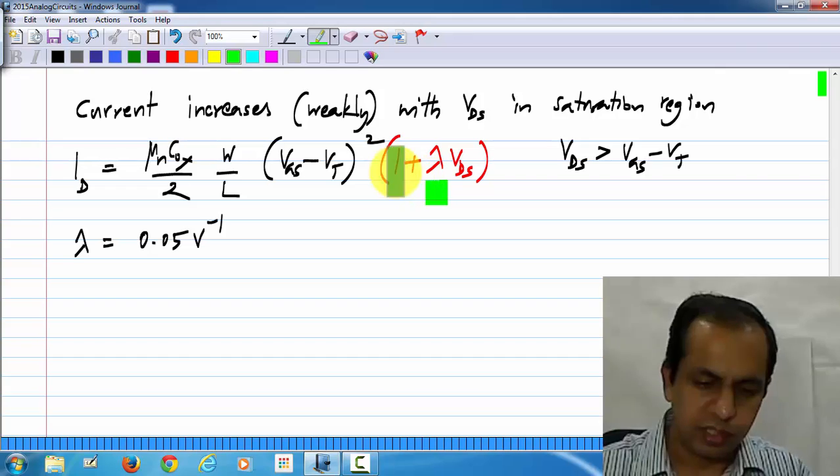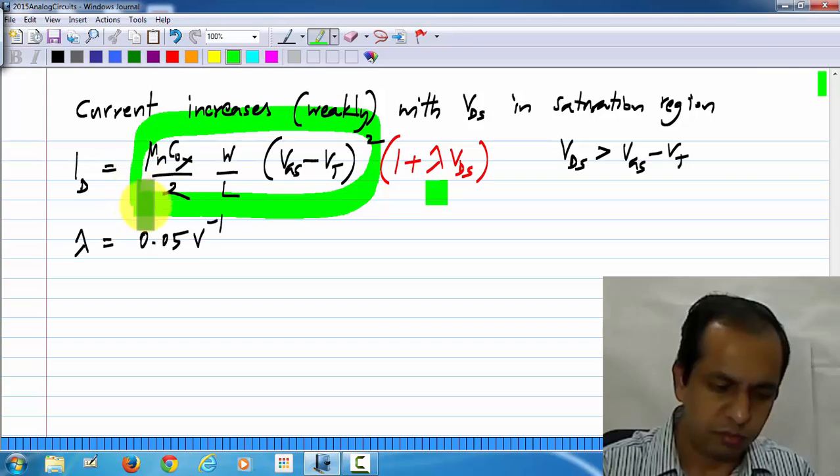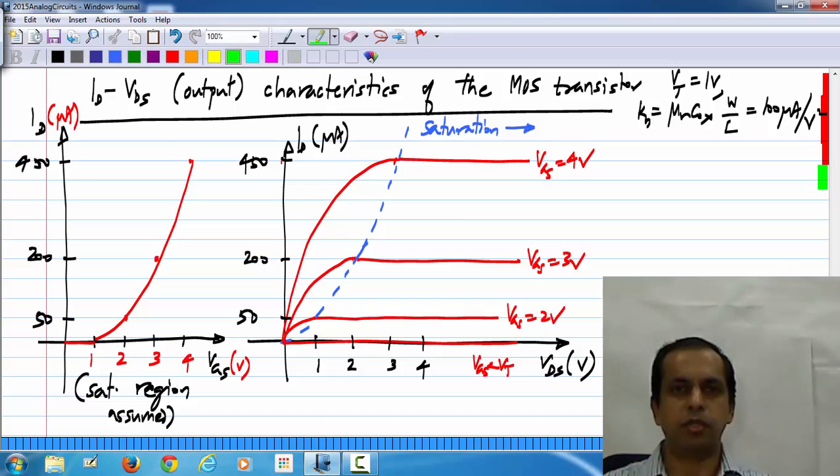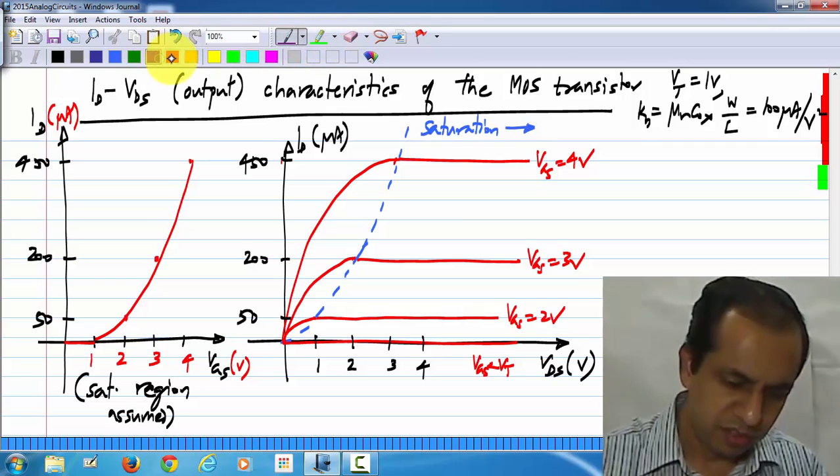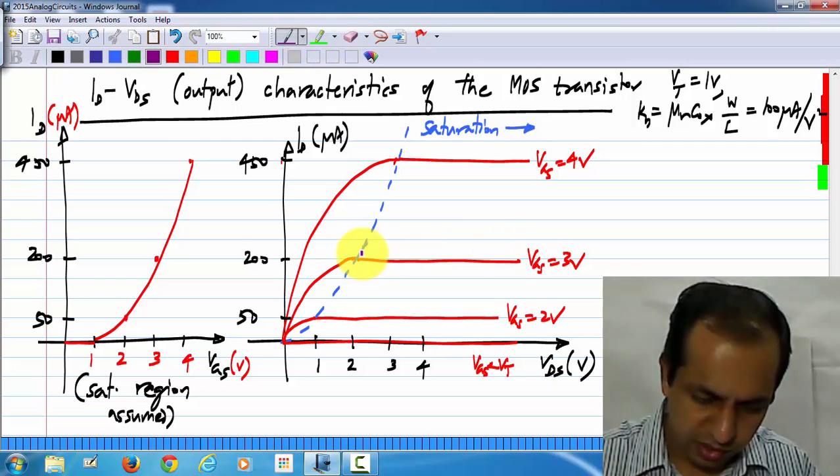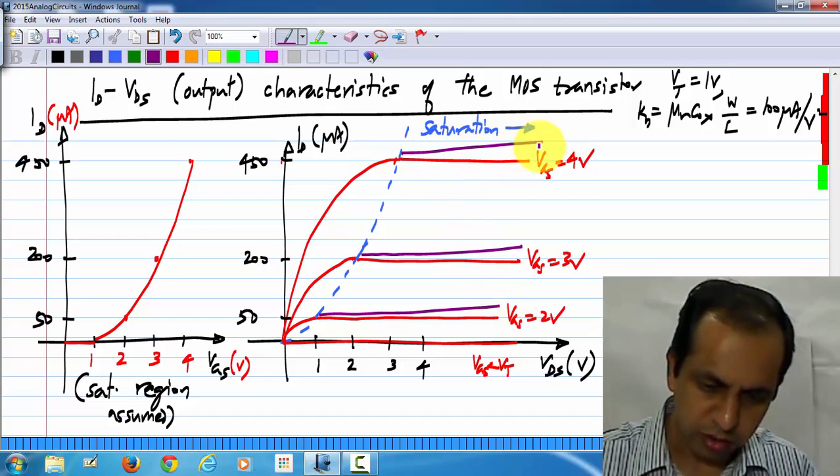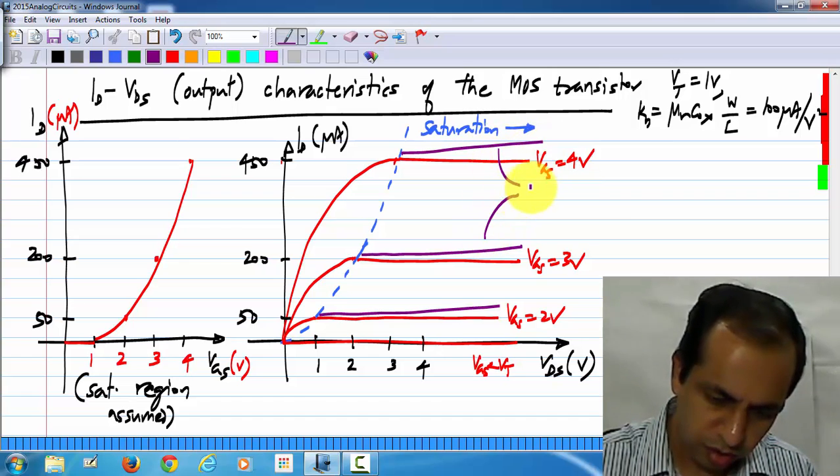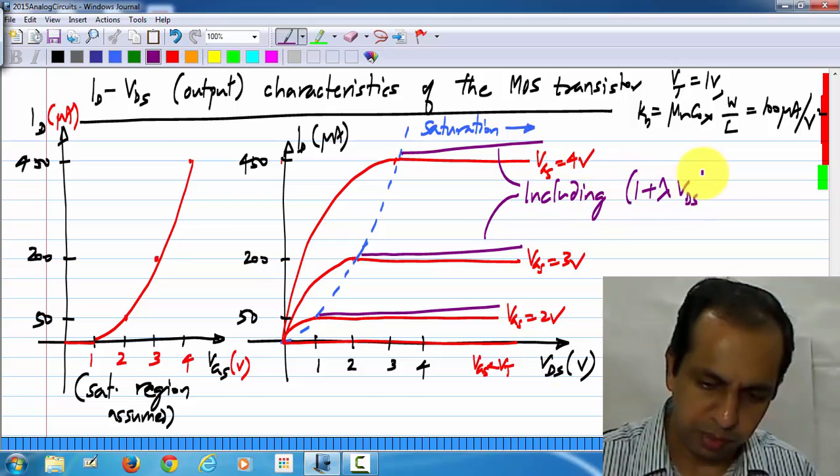So now, if I plot this, what happens? The current obtained from this term, what I have shown in black is what I have plotted here. Now, to this I have to have a multiplying factor of 1 plus lambda VDS. What happens if I do that? In the saturation region, the current will increase slowly. So that is what we get. This is including the factor 1 plus lambda VDS.